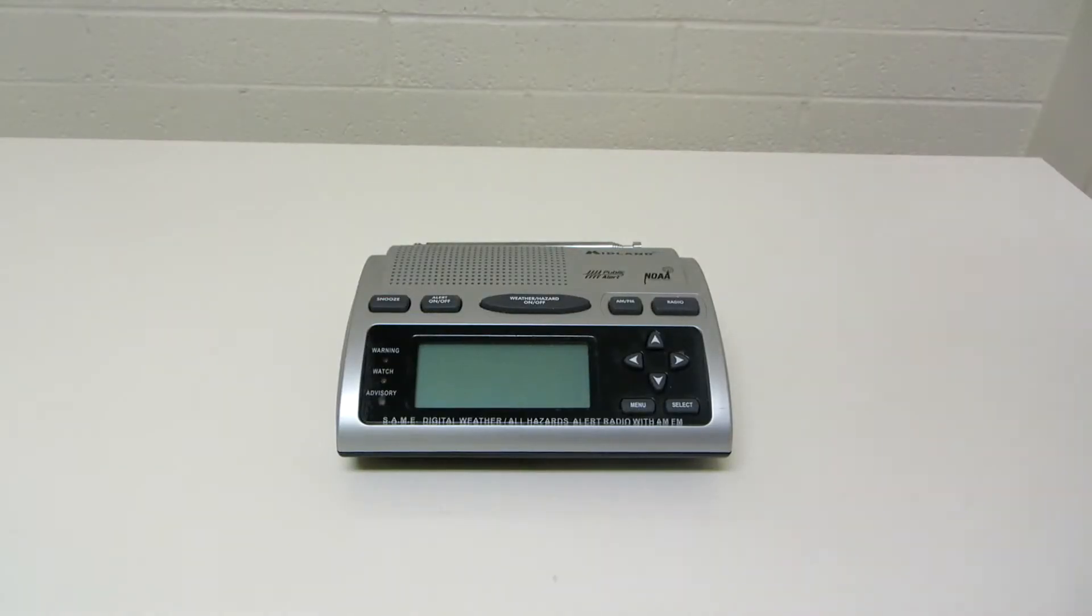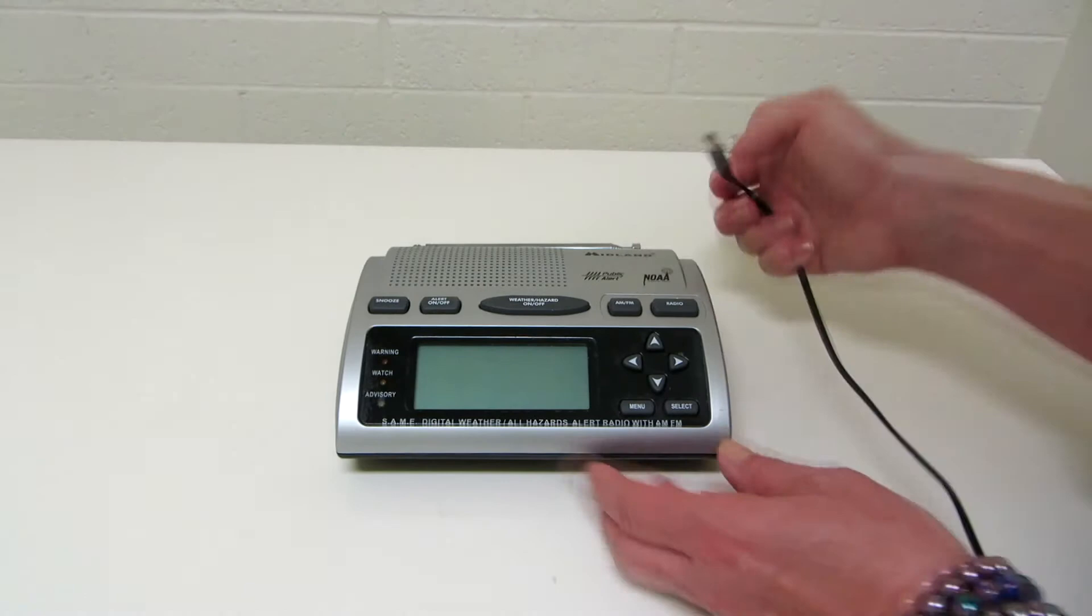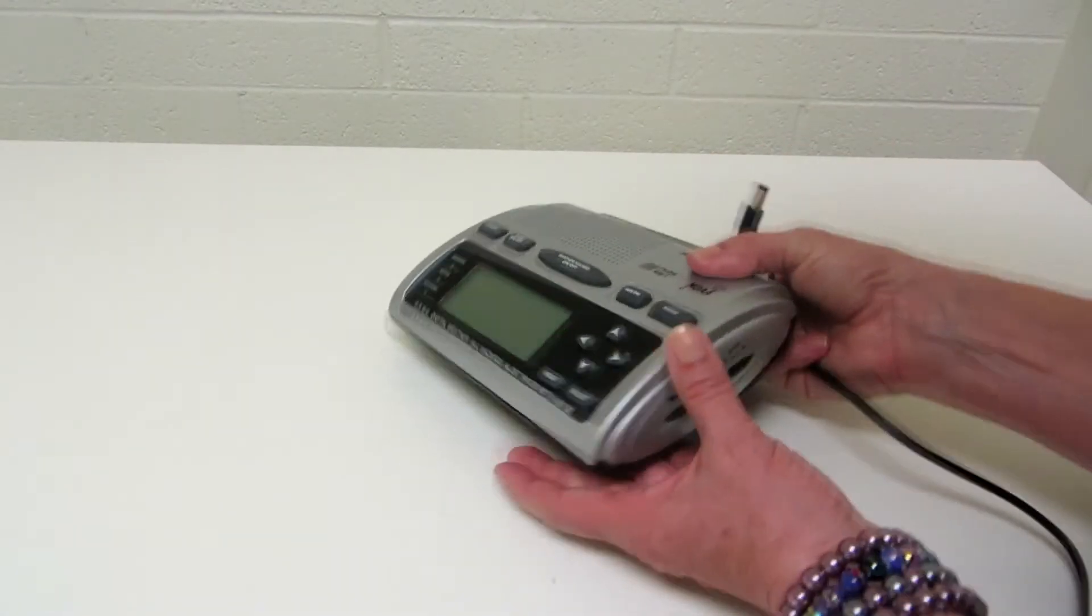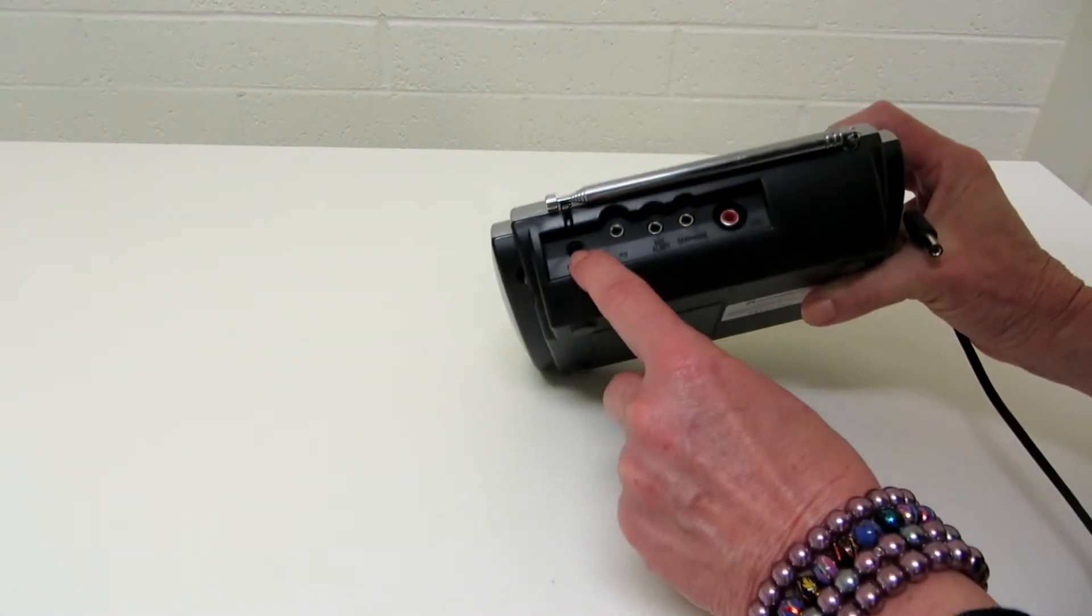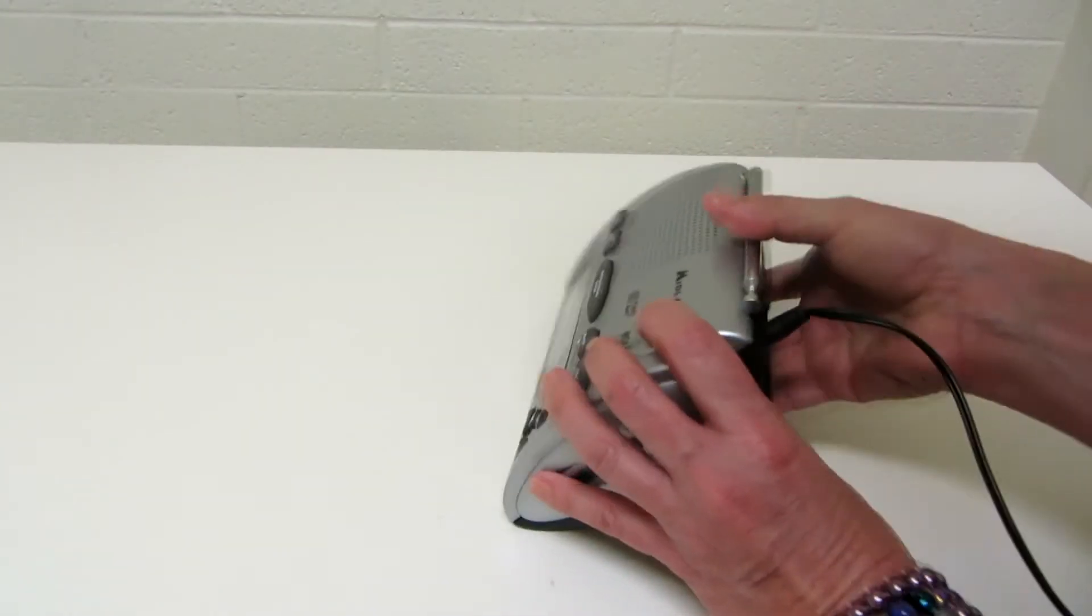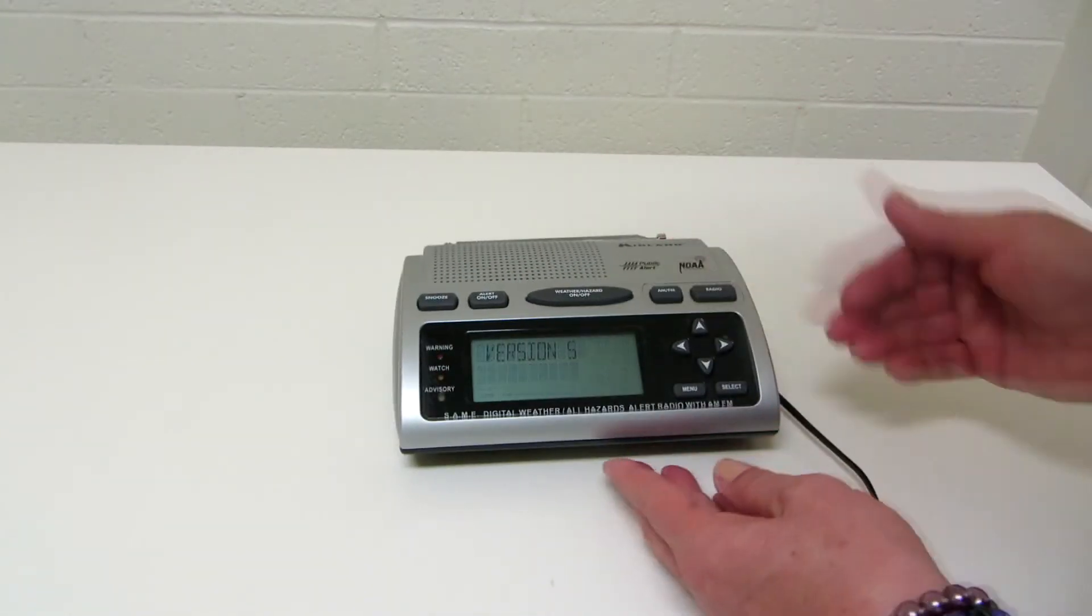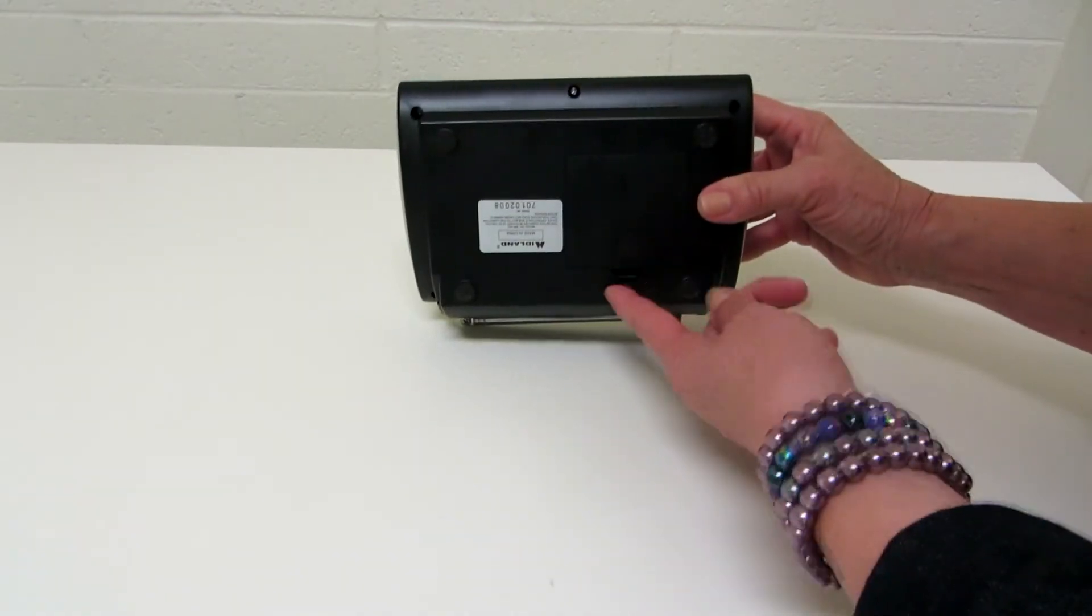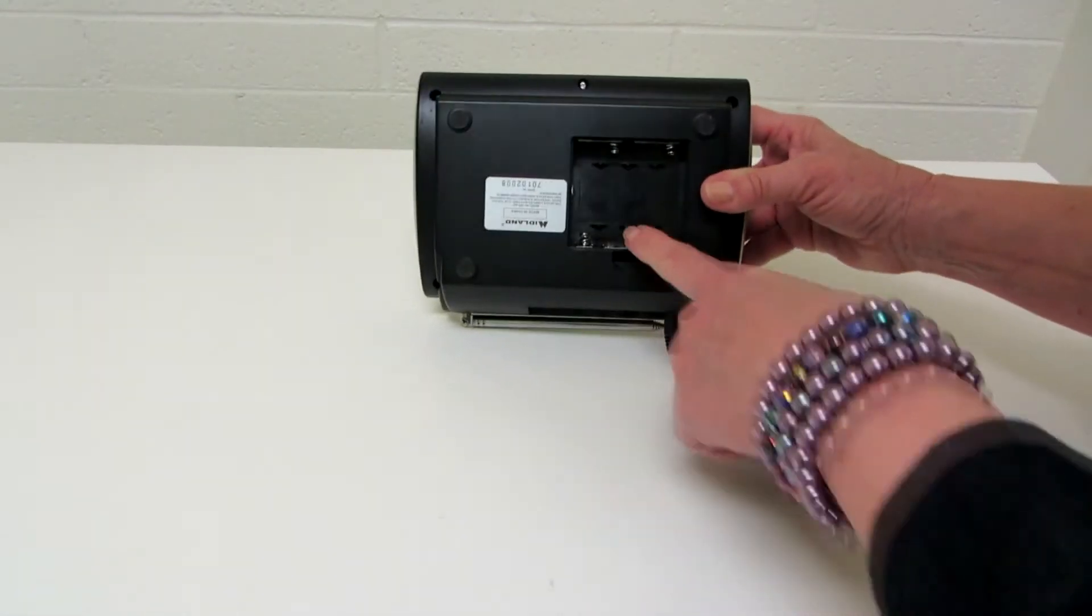The first thing you want to do to set up your radio is put in the electrical plug cord. There's a spot right here you plug that in, and the cord is about six feet long, so it helps you know where you can put it. There's also a box here that you want to open.